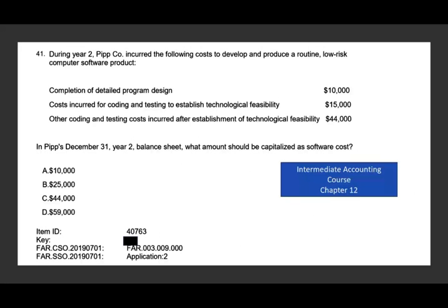So let's take a look at this question. As always, in blue, I will tell you in which course and in what chapter this topic is covered if you'd like to learn more. During year two, Pipe Company incurred the following costs to develop and produce a routine low-risk computer software product: completion of detailed program design $10,000; cost incurred for coding and testing to establish technological feasibility $15,000; other coding and testing costs incurred after establishment of technological feasibility $44,000. In Pipe's December 31st year two balance sheet, what amount should be capitalized as a software cost? We only start to capitalize costs after technological feasibility has been reached.